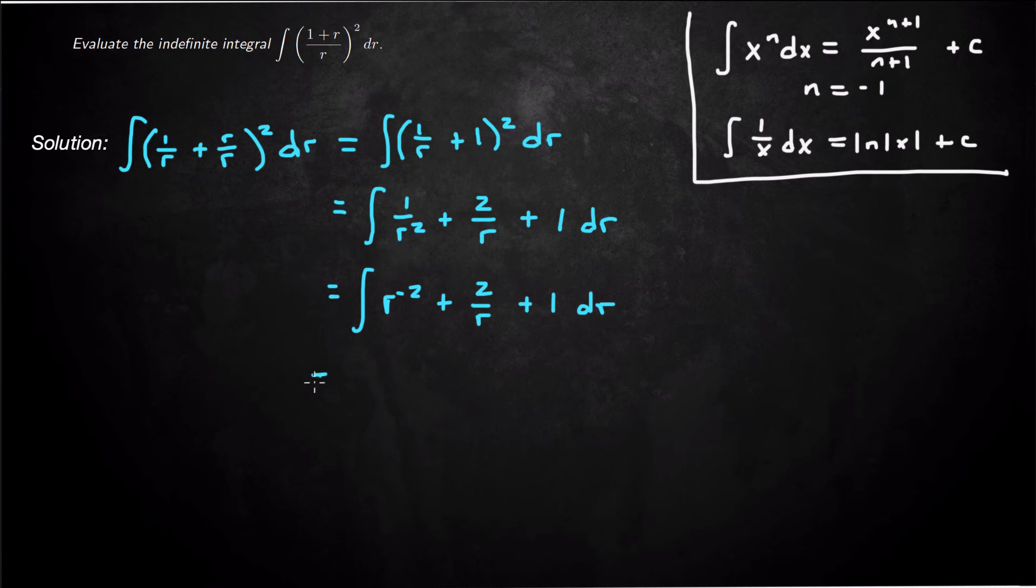So basically this is going to become integral of r to the negative 2 dr plus 2 times integral 1 over r dr plus integral of 1 dr. And the power law here says this is going to be r to the negative 2 plus 1 over negative 2 plus 1, plus 2 times natural log absolute value of r, plus r plus c.